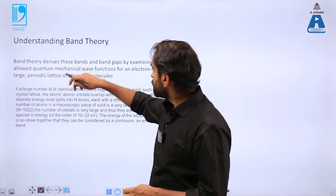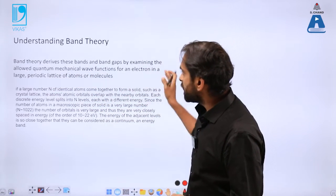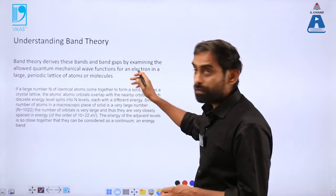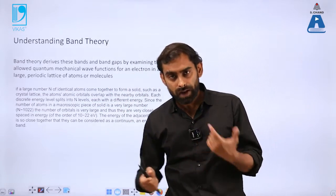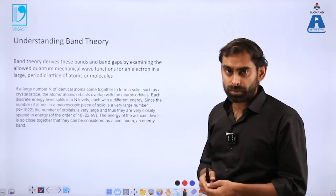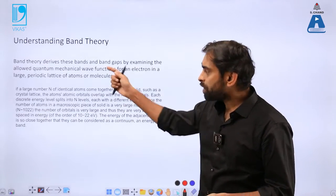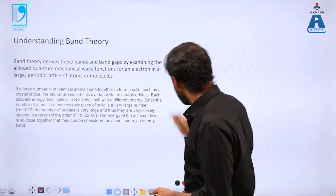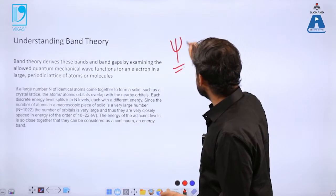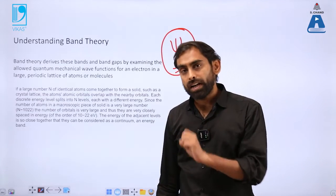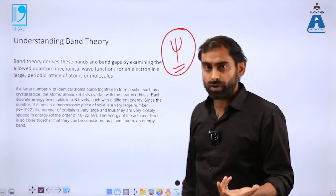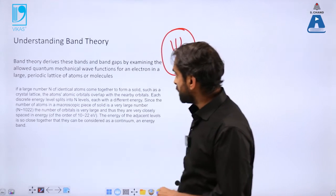Band theory derives these bands and band gaps by examining the quantum mechanical wave function. You can connect it with the first lecture - we talked about wave function psi, which defines the location and time of any electronic wave in terms of the Schrodinger wave equation which was time dependent.